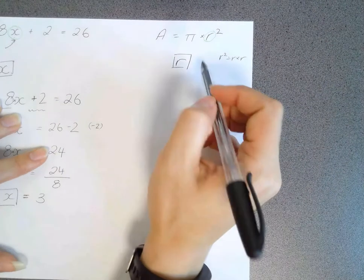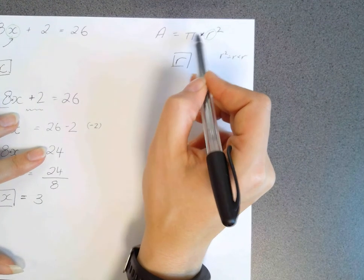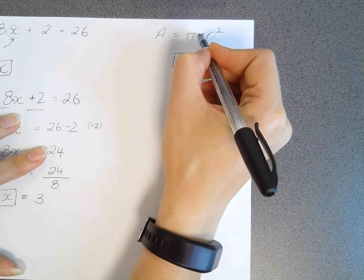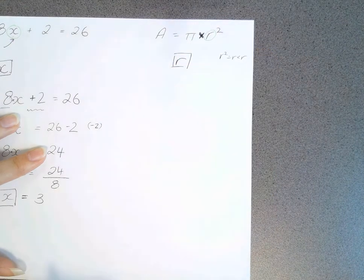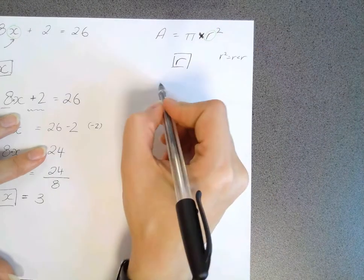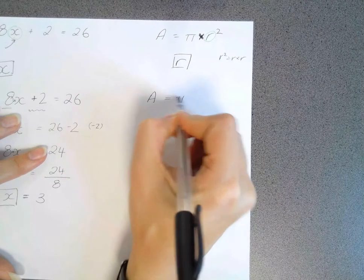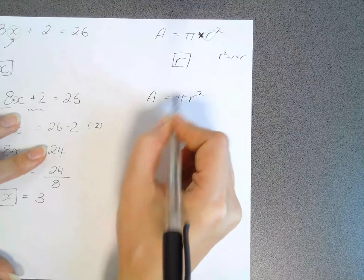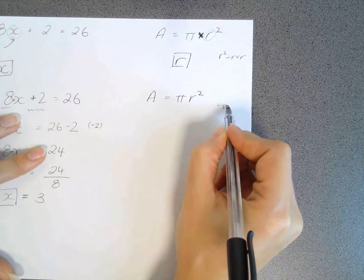And the first thing I would rearrange is this pi symbol. Let's get rid of it. And we know that if it's using a times over here, its opposite is divide. So we are going to firstly divide each side by pi.